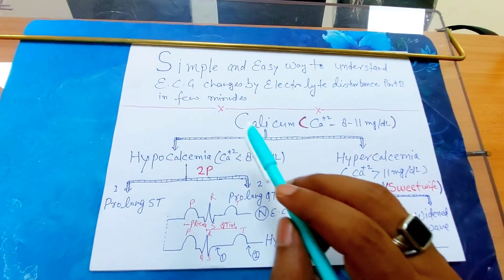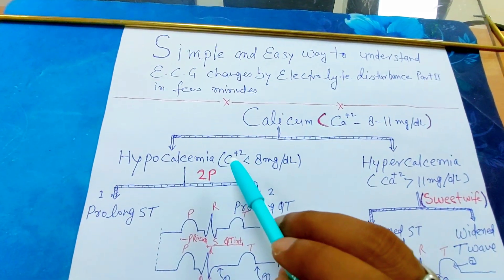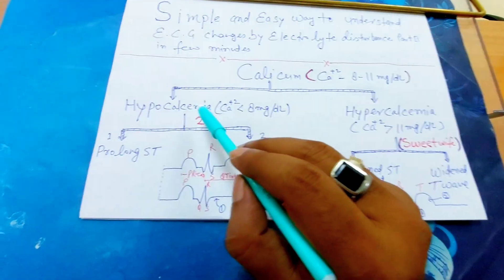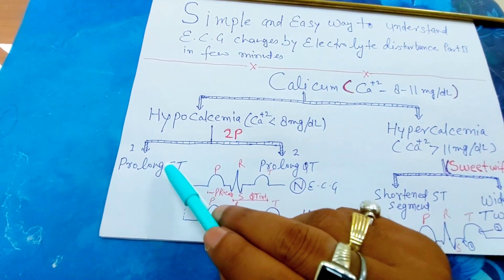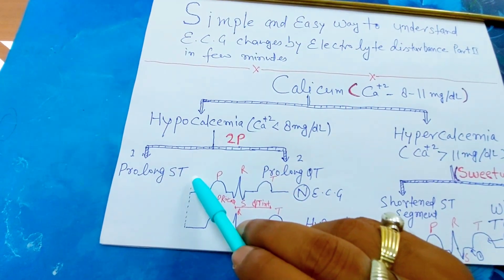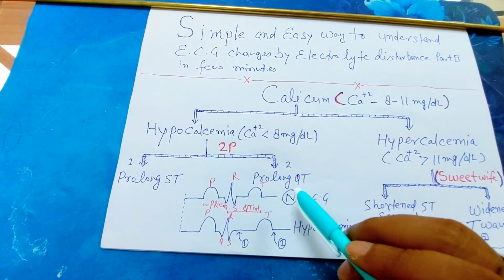How do you remember the ECG changes in hypocalcemia by 2P? First is prolonged ST segment, second is prolonged QT interval.